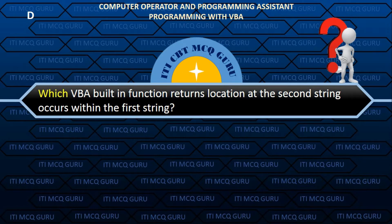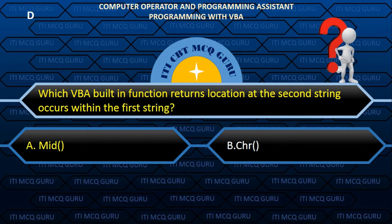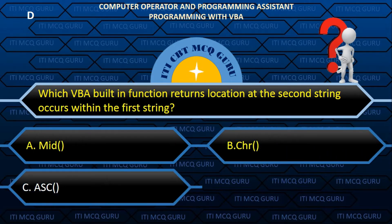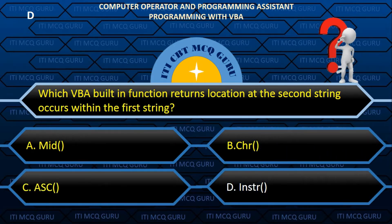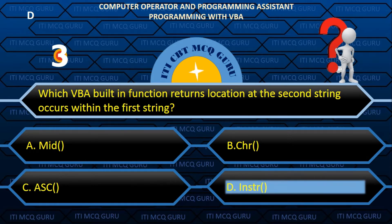Which VBA built-in function returns the location at which the second string occurs within the first string? Answer: D. INSTR.